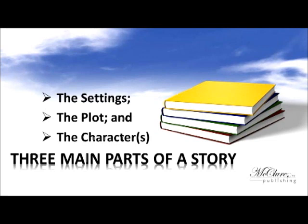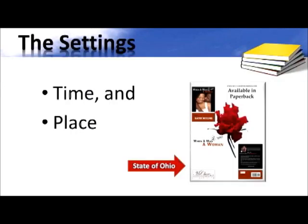There are three main parts of a story: the settings, the plot, and the characters. The setting is where your story takes place. The setting is a time — the future, the past, the present. The setting is also the place — on the moon, in Chicago, at the White House.